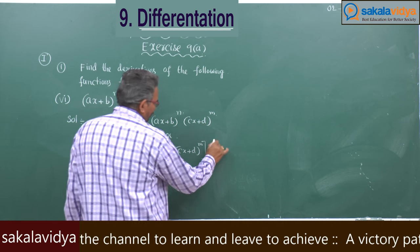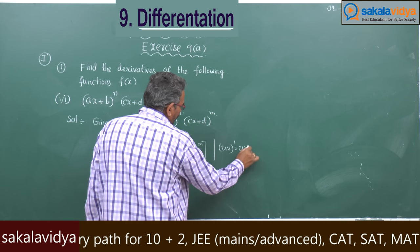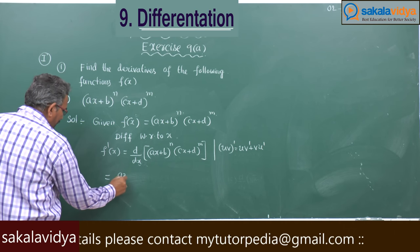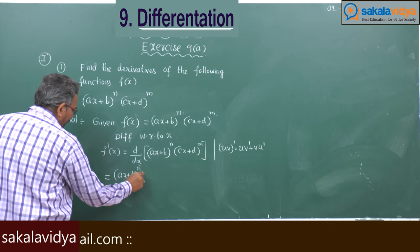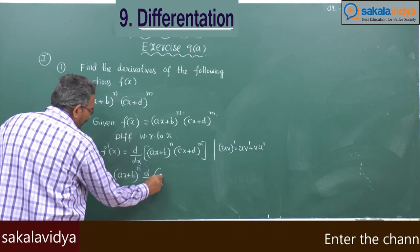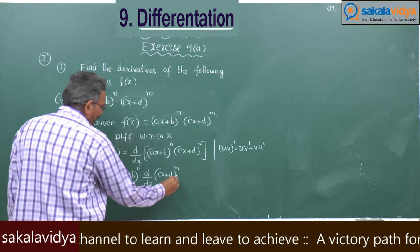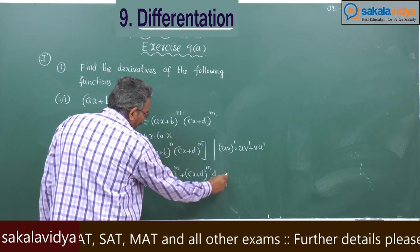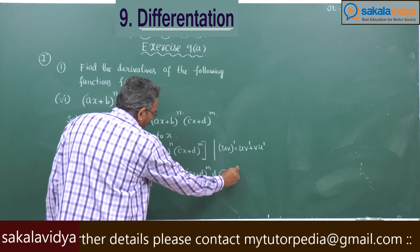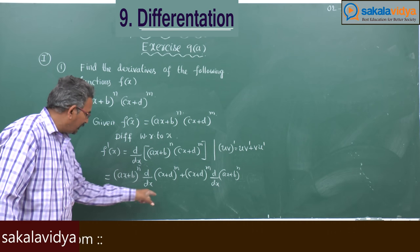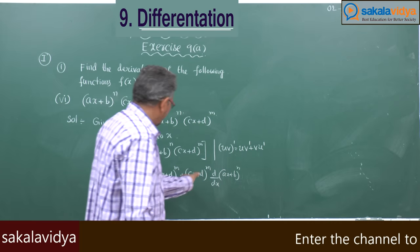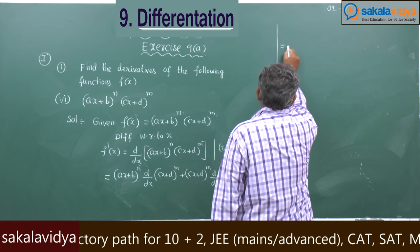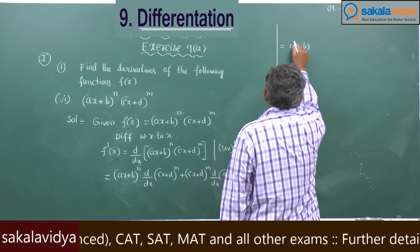Now, (uv)' = u·v' + v·u'. So this equals (ax+b)^n · d/dx[(cx+d)^m] + (cx+d)^m · d/dx[(ax+b)^n]. Let us first compute the derivative of the first term, then move to the second.